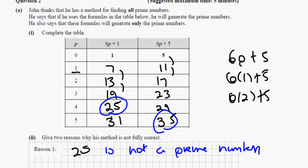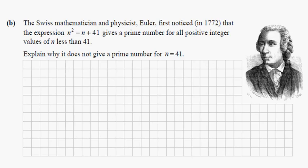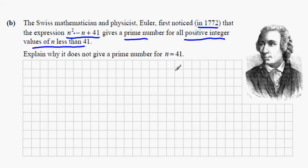The Swiss mathematician Euler first showed in 1772 that the expression n² − n + 41 gives a prime number for all positive integer values of n less than 41. Explain why it does not give a prime number for n = 41.